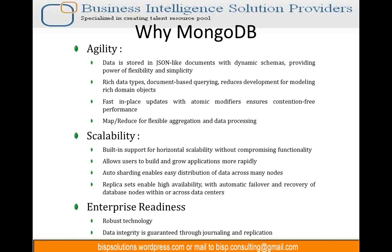Why MongoDB? It's very agile — we don't have a fixed schema. By agile I mean a continuously incremental approach: if I want a record with 1000 columns, I can do that; if the next record has only two columns, I can do that too. Within the agility comes MapReduce for better data processing. The second thing is scalability — we can scale horizontally and allow applications to build and grow more rapidly.